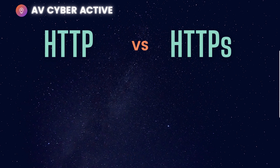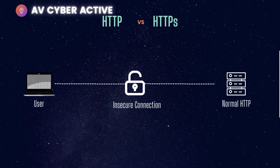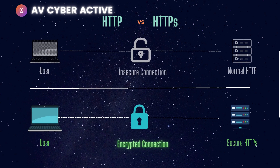Let us understand the difference between HTTP and HTTPS, beginning with HTTP. With HTTP, when a user tries to connect to a web server, the connection is in plain text, which means if there's a man-in-the-middle attack going on, the entire session is unsecured and all the contents of the traffic can be seen in plain text. But with HTTPS, when a client tries to connect to a web server, the entire connection is encrypted using PKI — which is Secure Socket Layer or TLS. The session is encrypted and all the information is scrambled, which can only be decrypted at the other end using public key encryption.